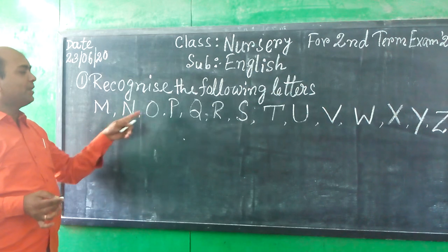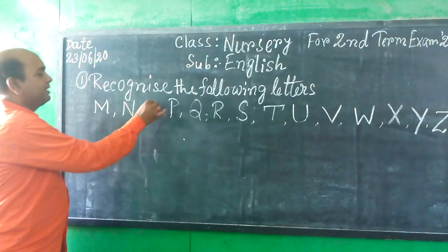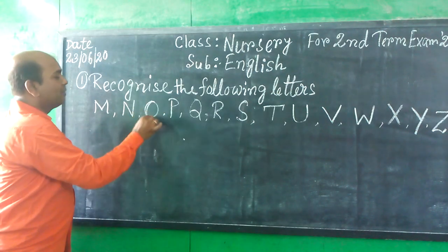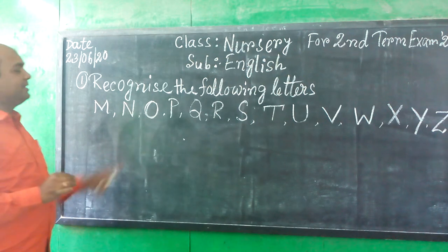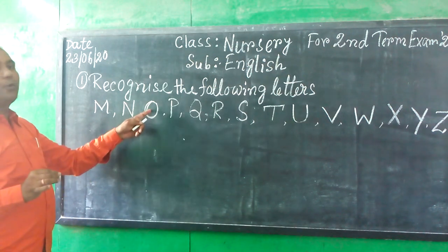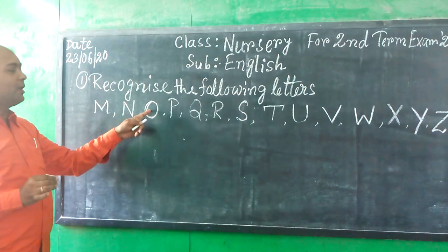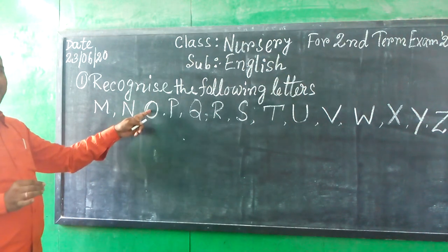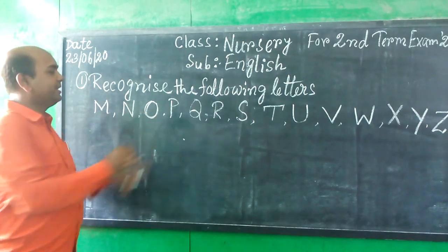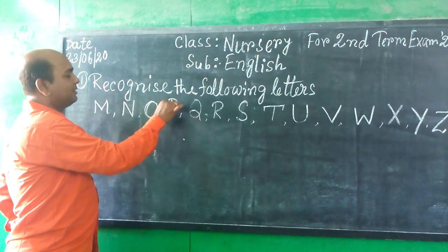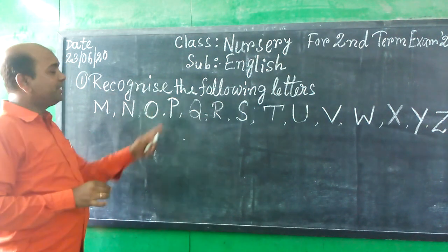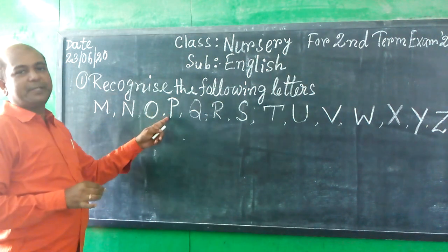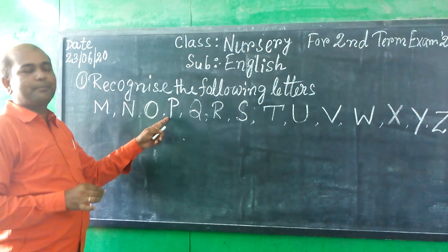What is it? This letter is called O. O for Apple. What is it? It is called P. P for Parrot.